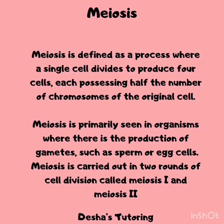Meiosis is defined as a biological process that gives rise to four gametes or sex cells, each possessing half the number of chromosomes of the original cell. Meiosis is primarily seen in organisms where there is a production of gametes, such as sperm or egg cells. Meiosis is carried out in two rounds of divisions, called meiosis 1 and meiosis 2.